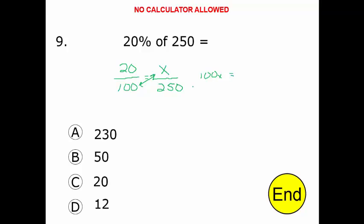That gives us 100x equals 20 times 250. Can you do it in your head? Think of it this way: 2 times 250 is 500. Adding a zero, we get 5,000. Now solving for x, divide both sides by 100. When dividing with all these zeros, you just cross them out. We find out that x equals 50, and that's just one way of finding the answer. Letter B.